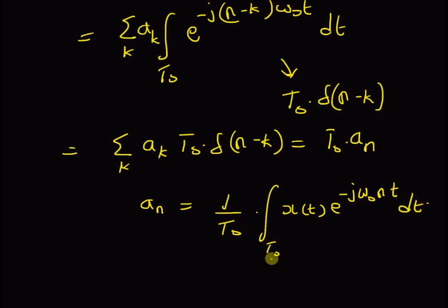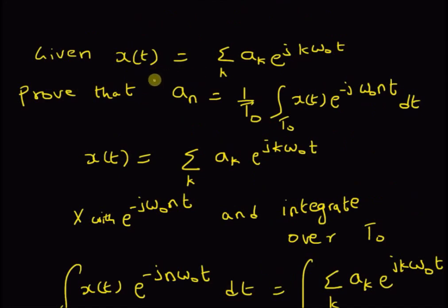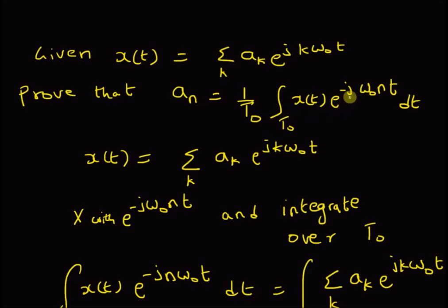The integration is over a single period T₀. Therefore, given the Fourier synthesis equation x(t) equal to the summation over k of aₖ multiplied by e^(jkω₀t), the Fourier coefficients aₙ are given by (1/T₀) integral over the period T₀ of x(t) multiplied by e^(-jnω₀t) dt. Thanks for watching.